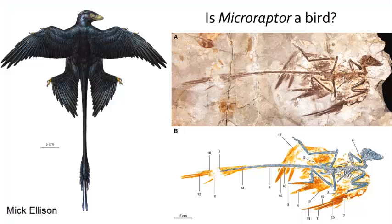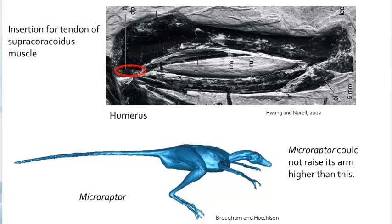What about Microraptor? Why is Microraptor — this feathered Eumaniraptoran dinosaur — not considered a bird? It sure does look like a bird with those feather impressions. Well, Microraptor lacks the key bird trait of having a tendon for the supracoracoideus muscle running from the humerus to the sternum through the hook in the coracoid. As such, Microraptor could not raise its arms much higher than shown in this diagram — Microraptor was a glider and likely did not flap its wings, but Archaeopteryx could flap its wings. This is the sole difference between a dinosaur and a bird.